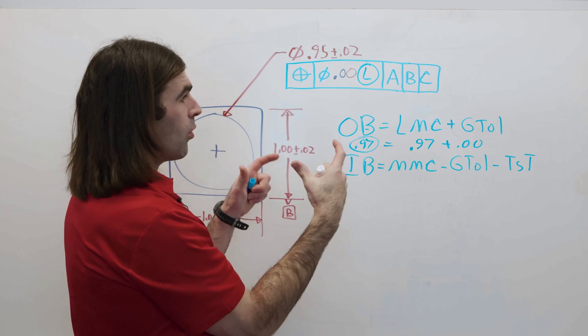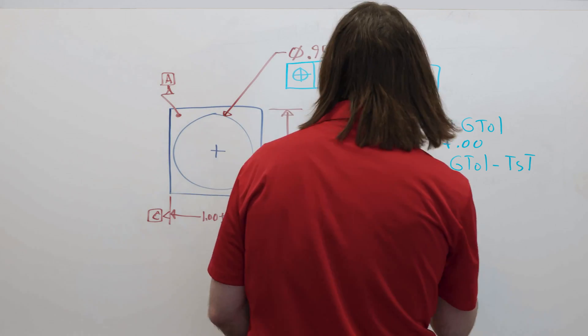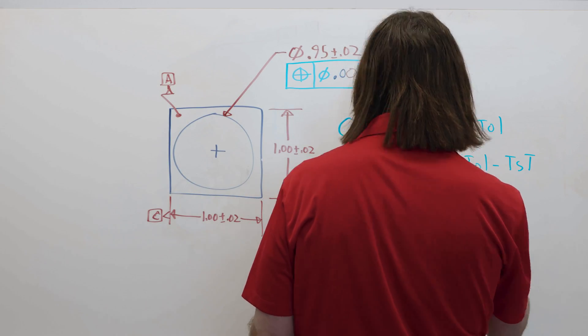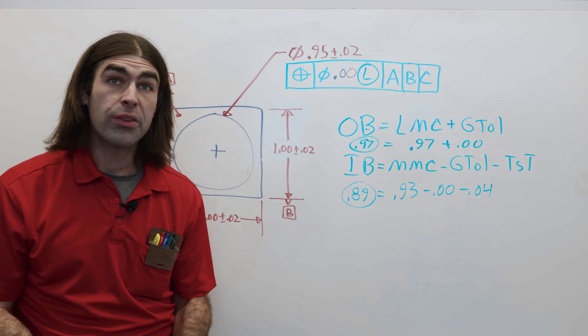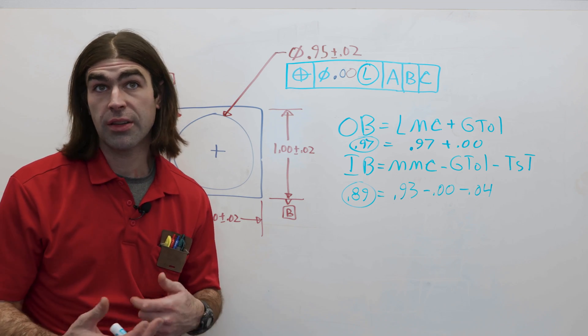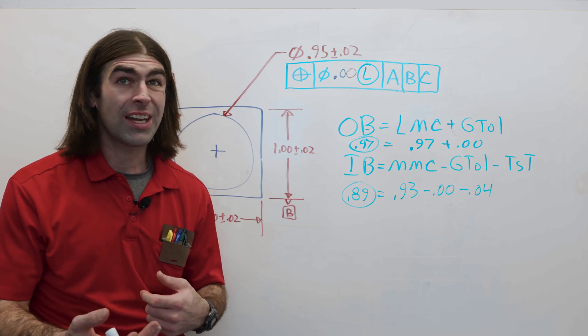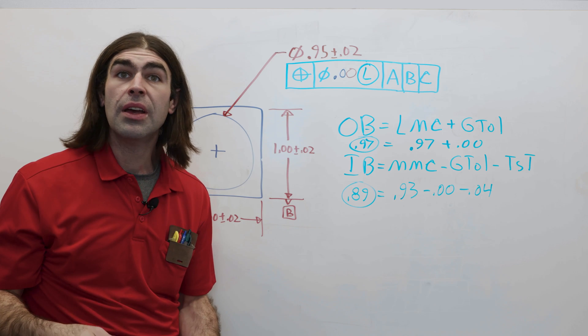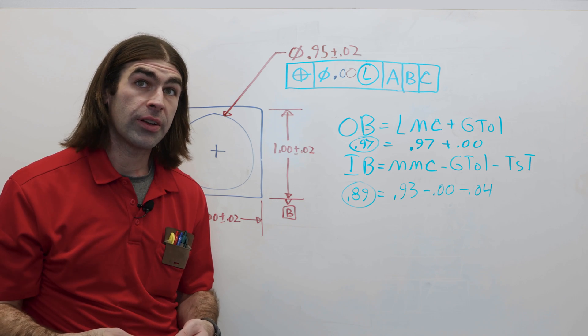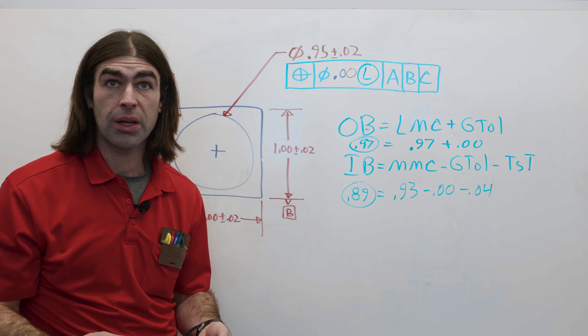Now, the downside is now the hole can get way smaller. So, let's look at our MMC. Our inner boundary is 0.89. So, depending on the function of the part, this could be acceptable. But, it is a way to protect the wall thickness while giving more tolerance for manufacturing.